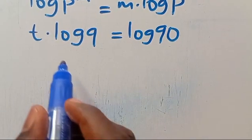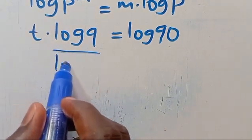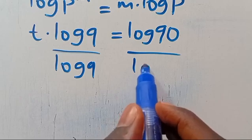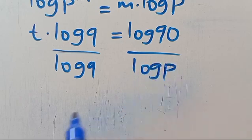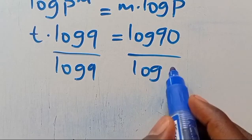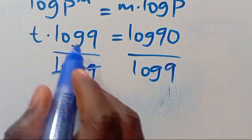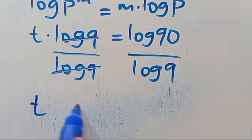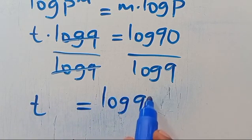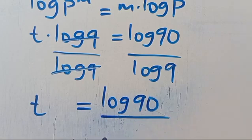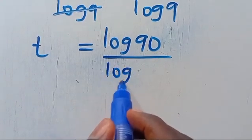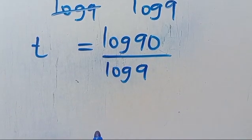Let's divide through by log 9. This and this will cancel out, so we have t equals log 9t divided by log 9.